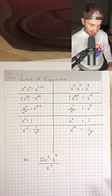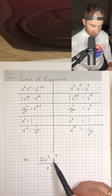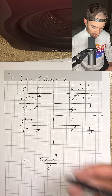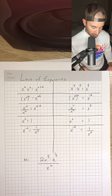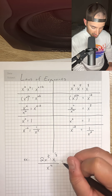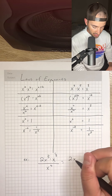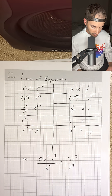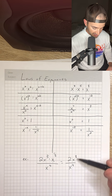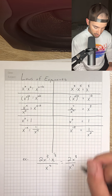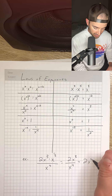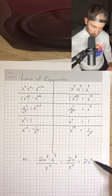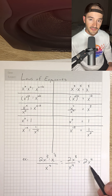So if we had the example 2x to the fifth times x to the third over x to the fourth, we would just add these two exponents, 5 and 3. That gives us 2x to the eighth power over x to the fourth, and now we can subtract these exponents. So we would have 2x to the fourth because 8 minus 4 is 4, and 2x to the fourth would be our final answer.